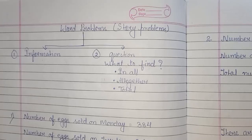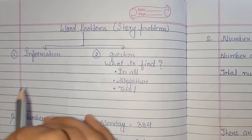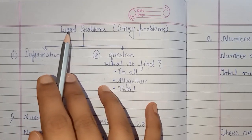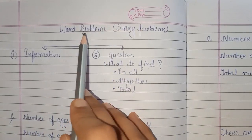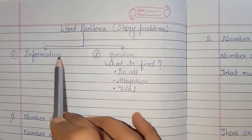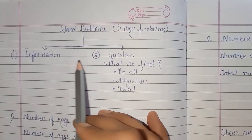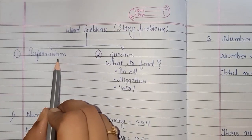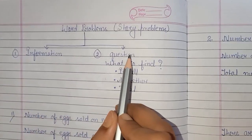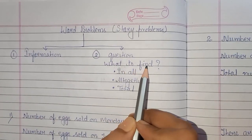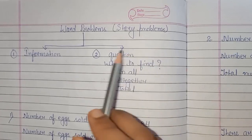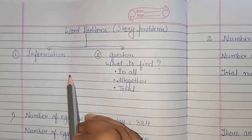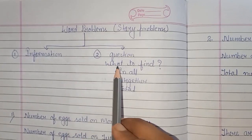Good morning dear children. Today we will learn how to write statements for word problems — we can call them story problems also. In a story problem, two things are given: the information and what we have to find. So in the statement, first we will write the given information and then what to find.